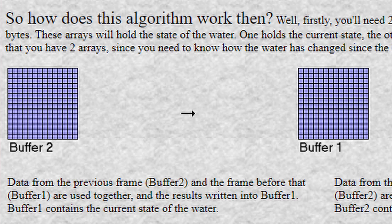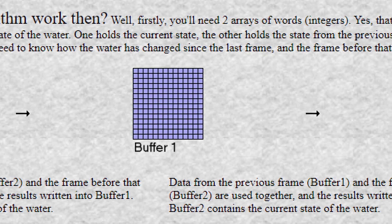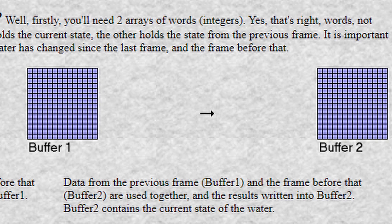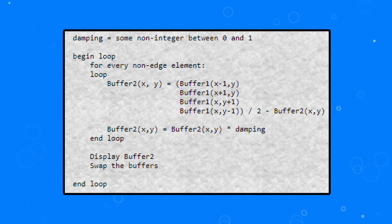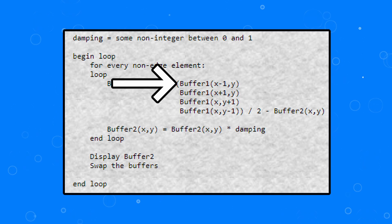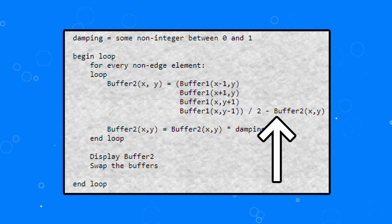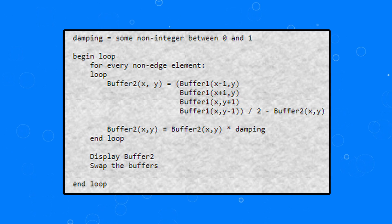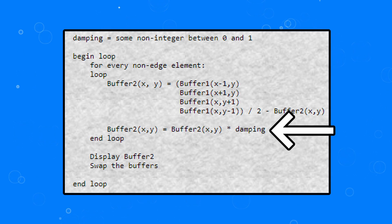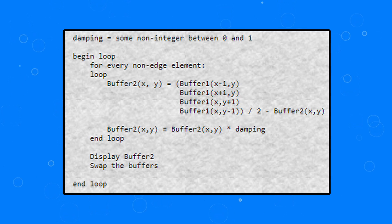The algorithm calls for two different buffers: one that holds the current state of the water ripples and one that holds the previous state, and we're going to be using graphics objects for this. To figure out the next state of any given pixel, we apply a formula where we add up the neighboring pixels' previous state and divide it by two, then subtract the value of the current state. We then apply a dampening so that our ripples lose energy over time and don't spread out everywhere. Finally, we update our current and previous buffers so that they're holding the correct information.